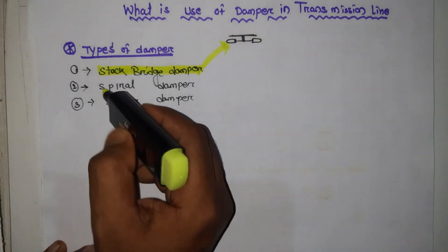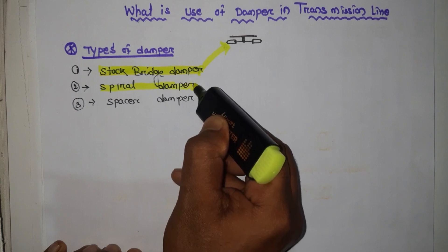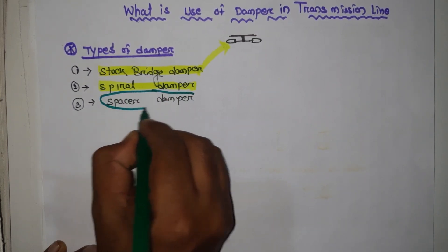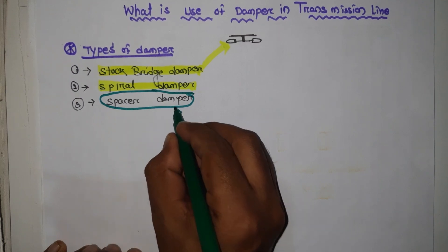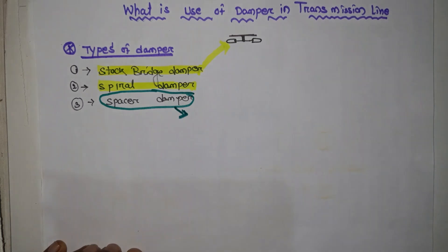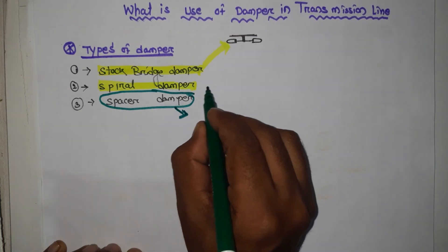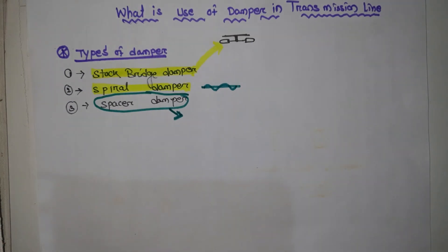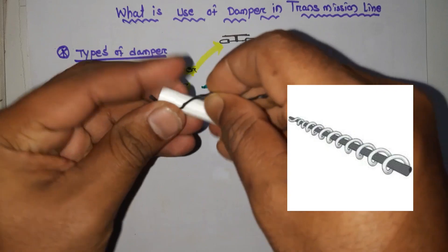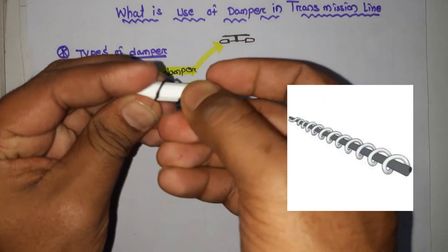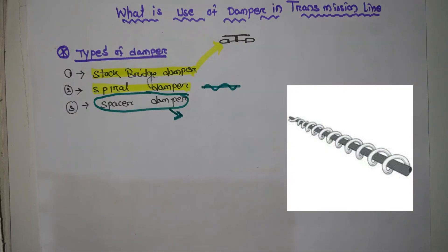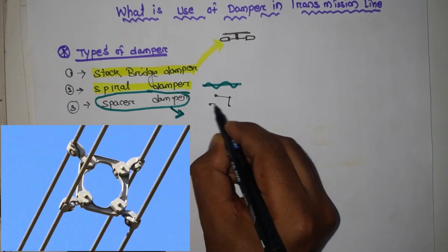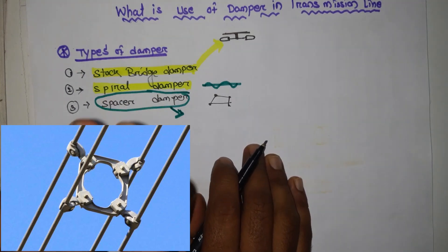The Stockbridge damper looks like this type, and the spiral damper has a similar use. The spacer damper works similar to the Stockbridge and spiral damper but requires some extra work. The spiral damper looks like a wire wound in a spiral shape around another wire. The spacer damper looks like a structure placed here and there between conductors.